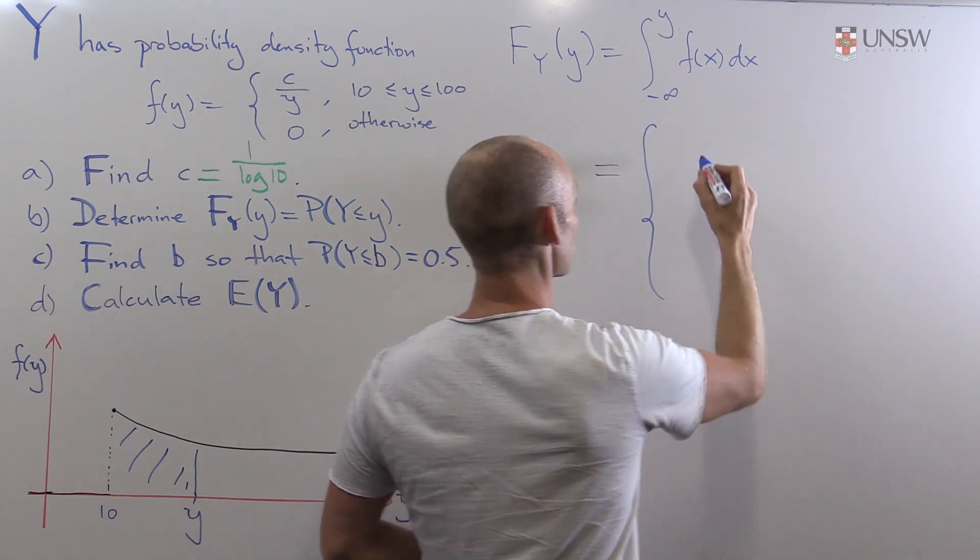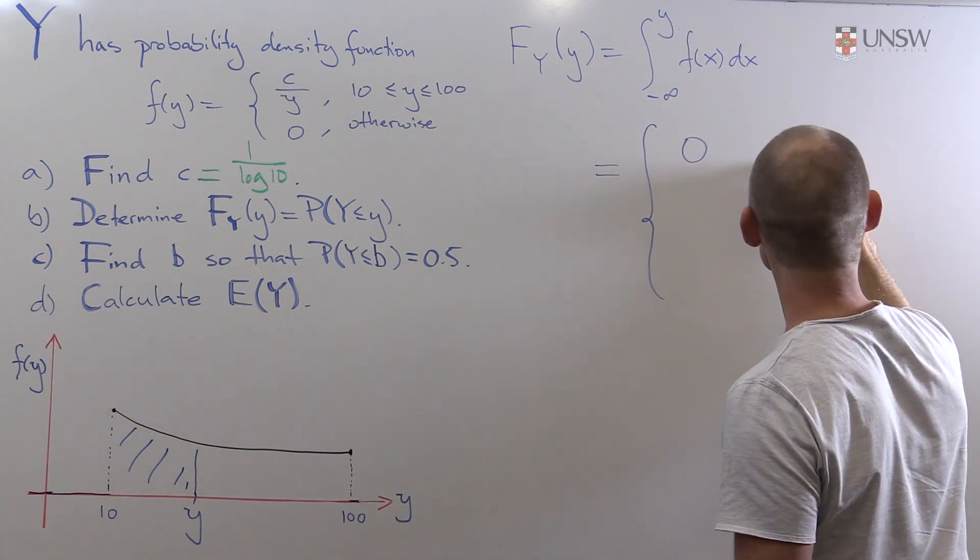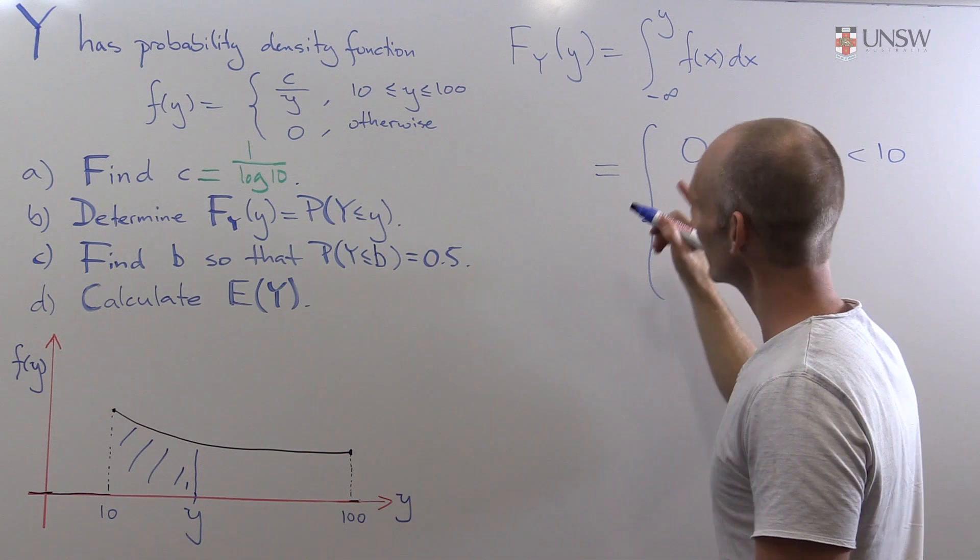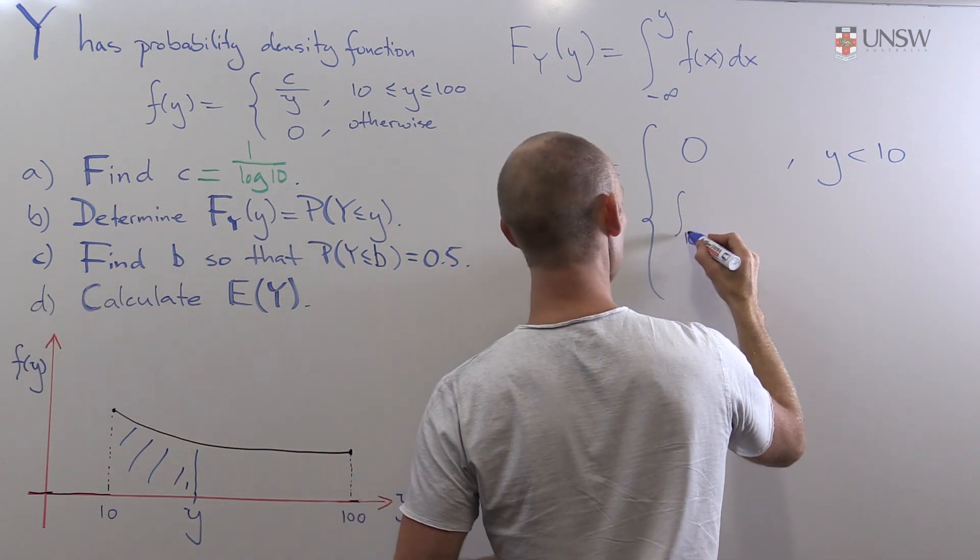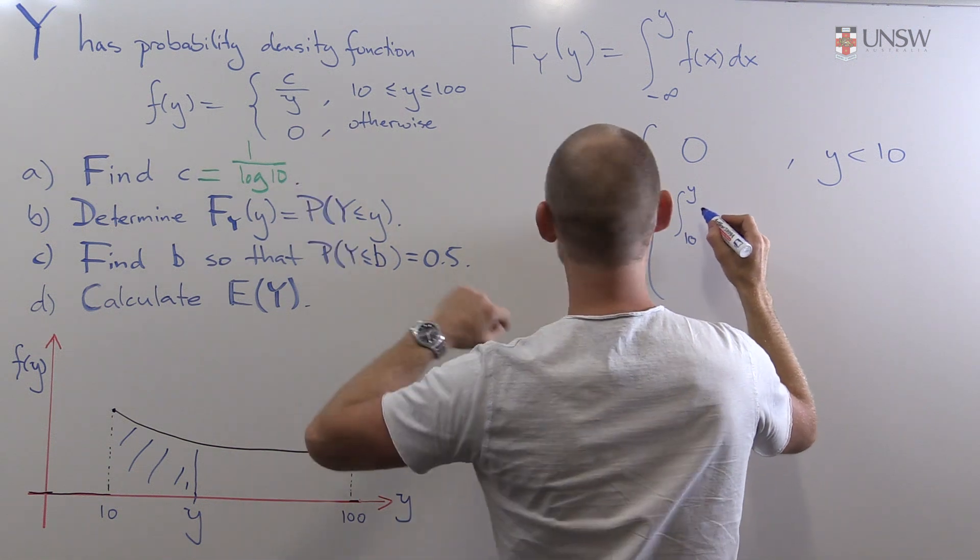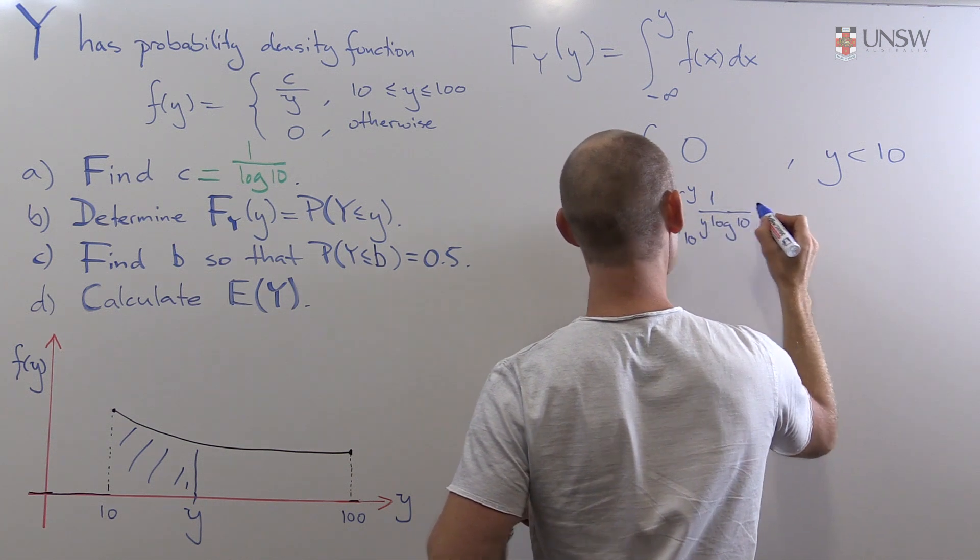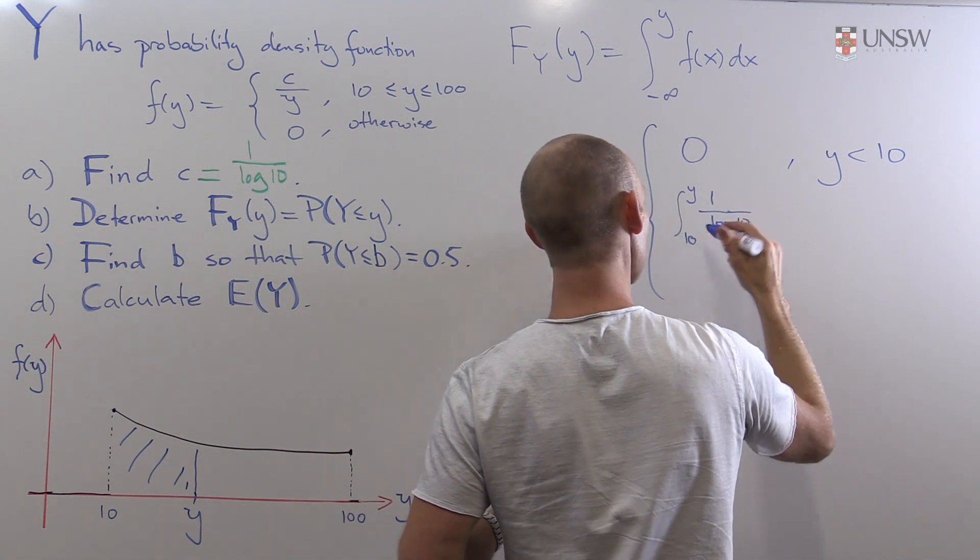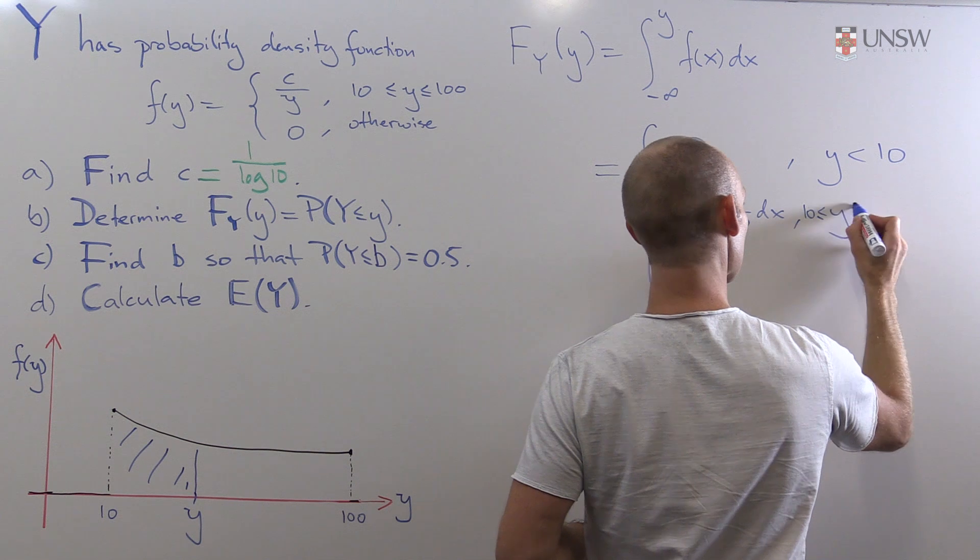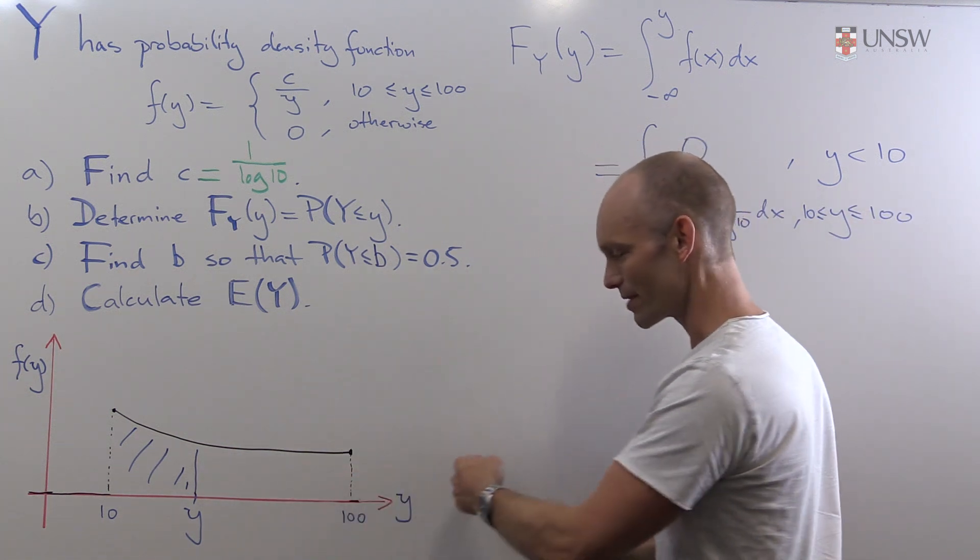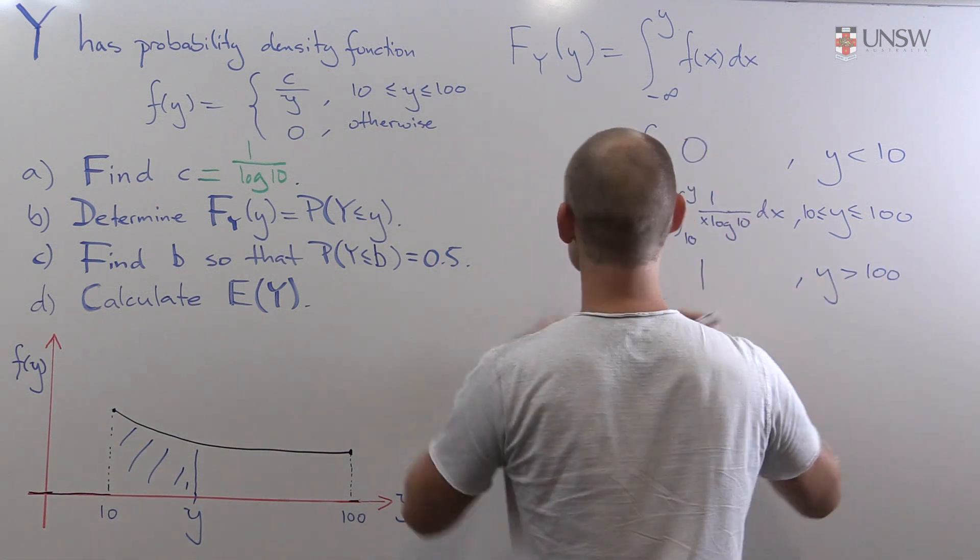So we have the first case, where we just have 0 area or 0 probability underneath the curve. That's if y is less than 10. Then we've got the interesting case, where we've got y being between 10 and 100. So we're integrating from 10 up to y over this function here c. And now we've calculated c, so that's 1 over x log 10 dx. And that's if y is within 10 and 100. And finally, we have that if y is on the other side of 100, that we've integrated over all the probability, and we now have that this function is equal to 1.